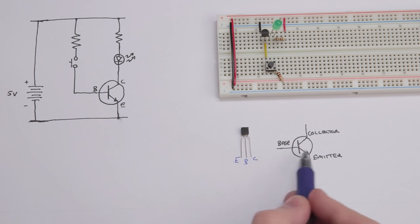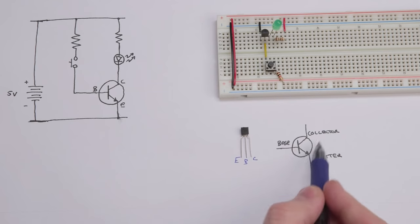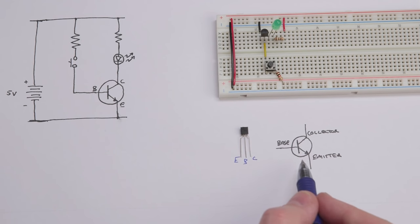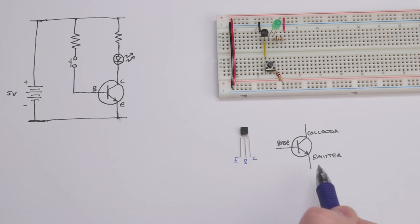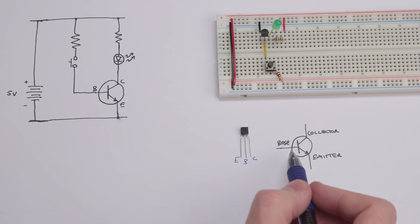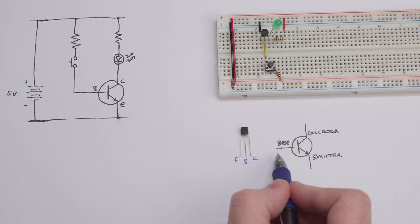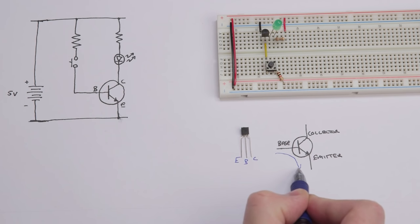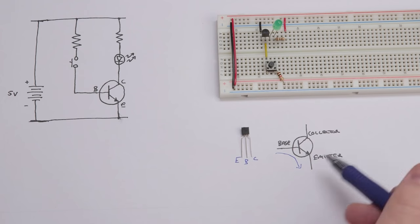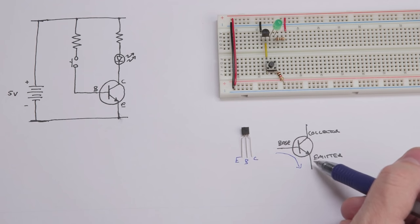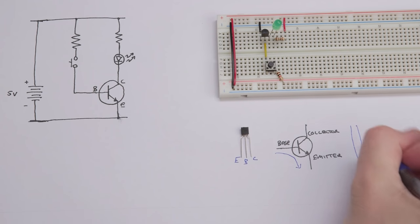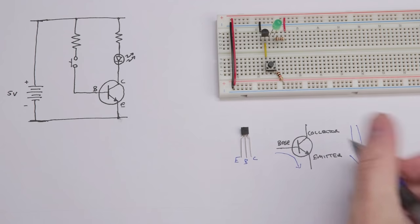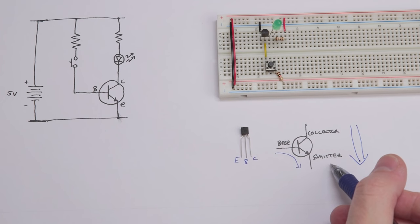So that's how this corresponds to the schematic symbol. What a transistor is, is basically a current switch. What that means is that if we establish a current from the base to the emitter in this direction, that'll switch the transistor on, and the transistor will allow a much larger current to flow from the collector to the emitter.